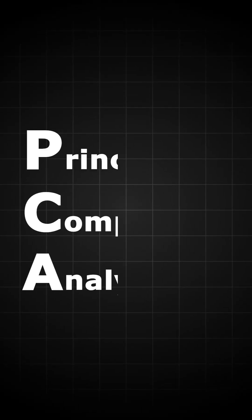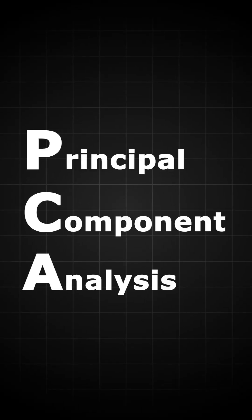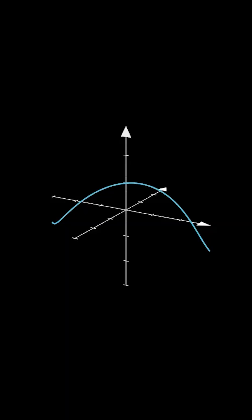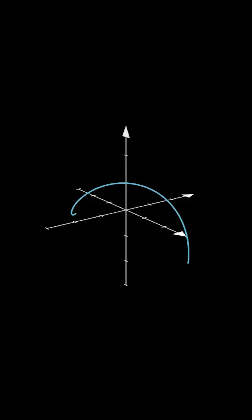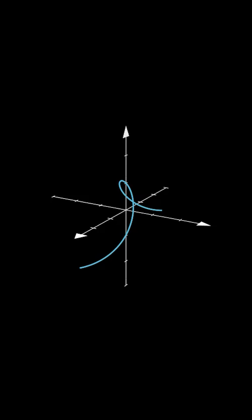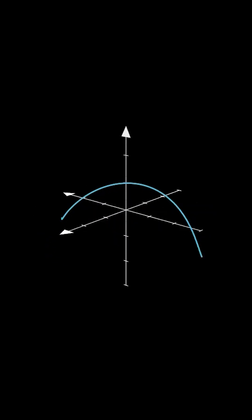PCA, or principal component analysis, finds new axes called principal components that capture the most variance in the data. Think of it as rotating the data to see it from the best angle, so patterns are easier to spot and visualize.